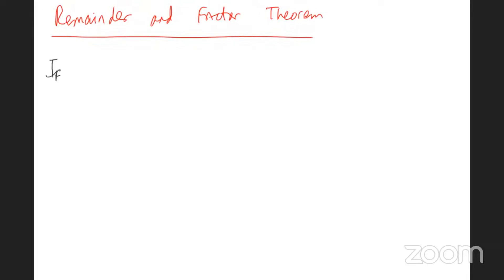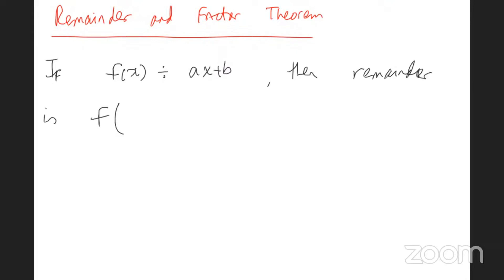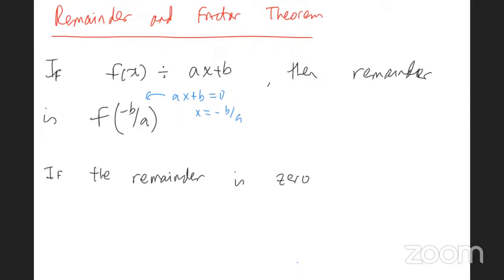So what does the theorem say? If f(x) is divided by ax + b, then the remainder is f(-b/a). You take ax + b, make it equal to zero, and solve for x. And if the remainder is zero, then we know ax + b is a factor.